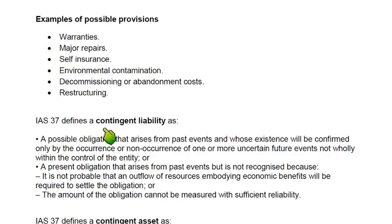The second component of IAS 37 is contingent liability. A contingent liability occurs when any one of the three conditions for a provision is not met. It is not recorded in the accounts — no journal entry is passed. Instead, it is only disclosed in the notes to the accounts, which form part of the five financial statements alongside the income statement, statement of financial position, statement of changes in equity, and statement of cash flows.